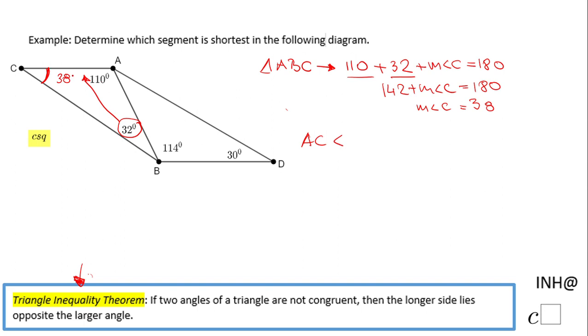Then the next angle is 38, so the next side in this inequality will be AB. The longest side in this triangle will be the one that goes with 110, which is BC. We finish with triangle ABC.